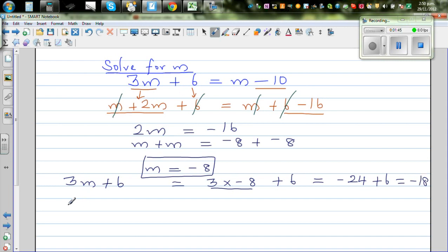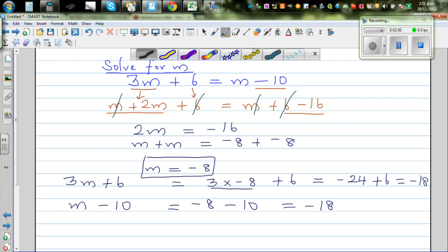What happens if you put m minus 10? That's negative 8 take away 10, which is also negative 18. So this is negative 18 and this is also negative 18, and you can give yourself 5 stars.